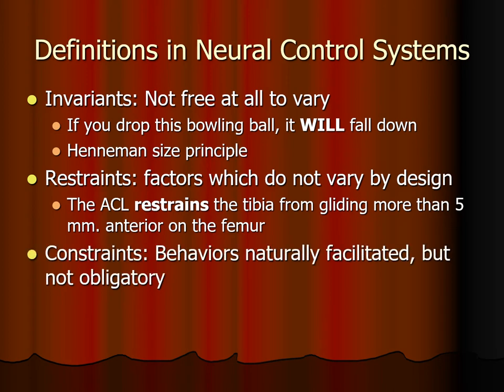Constraints are behaviors which are naturally facilitated but not obligatory. For example, when you jump off a chair that's about 20 inches high, usually your knees, hips, and ankles bend quite a bit in order to absorb the force. Now, if you want to, you can jump off the chair and keep your legs stiff — it's really uncomfortable because of the shock, but you can do it. So the limbs compressing through the joints bending is an example of a neuromotor constraint.